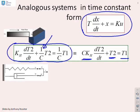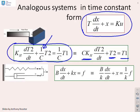What about the spring-damper system? You'll remember from the earlier videos this was the model we derived: b·dx/dt plus k·x equals f. If I want to put that into time constant form, I've got to get rid of this k multiplying on x, and in order to do that I've got to divide the whole equation by k. So this is what you get: b/k·dx/dt plus x equals 1/k times f, and you'll see the coefficient of x is 1.